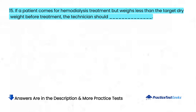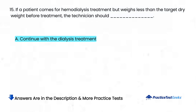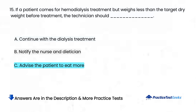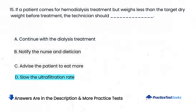If a patient comes for hemodialysis treatment but weighs less than the target dry weight before treatment, the technician should: A. Continue with the dialysis treatment. B. Notify the nurse and dietician. C. Advise the patient to eat more. D. Slow the ultrafiltration rate.